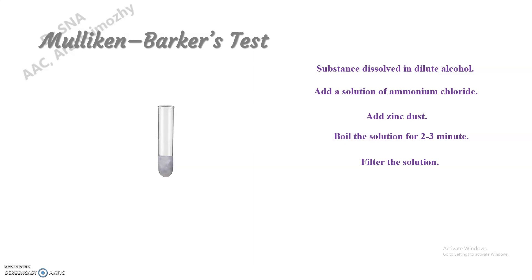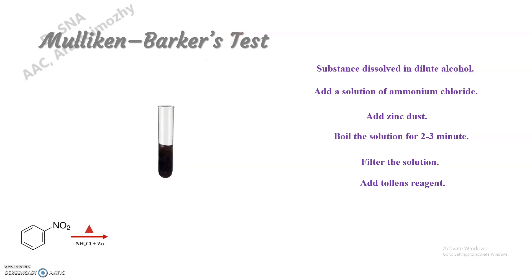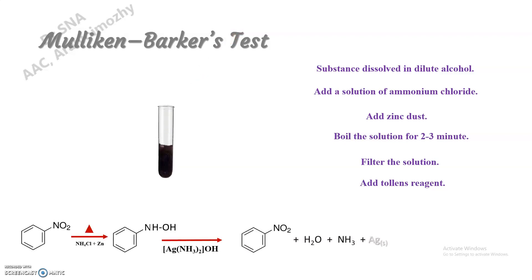To this filtrate, add Tollens reagent. Silver gets precipitated out, and the grey precipitate turns black. This indicates the presence of the nitro group.